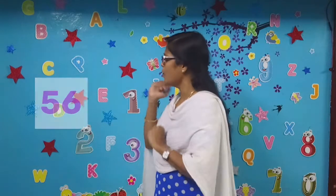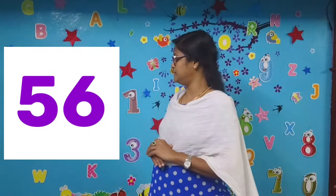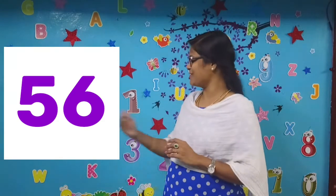Now tell me, what number is this? 56 — well done kids, well done! Now tell me, what number is this? 57, 57 — you're right, you're right kids!